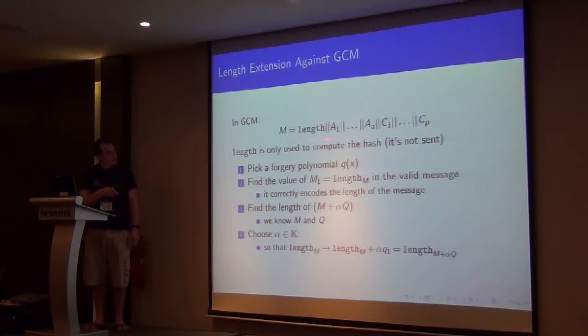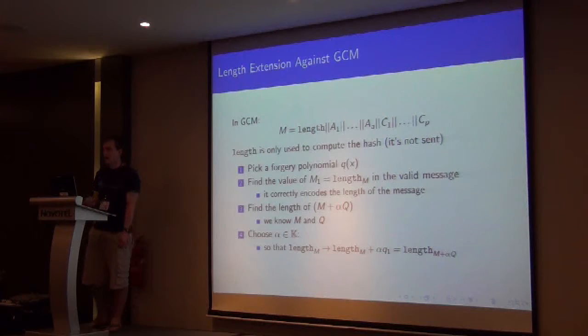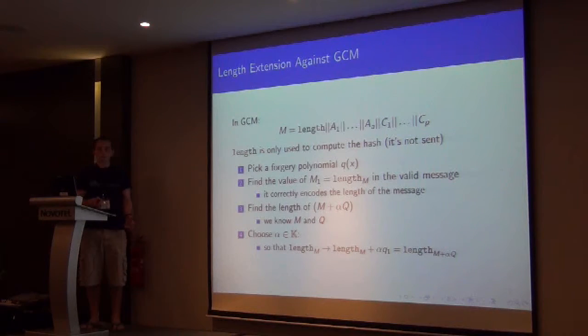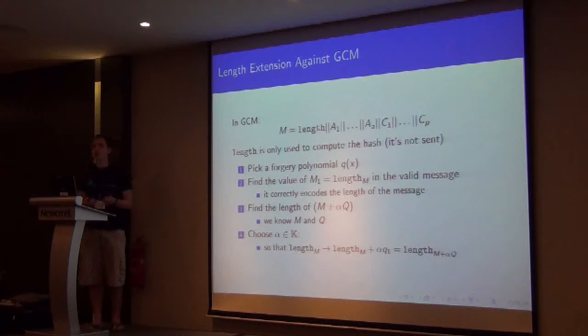So in GCM, your message looks a bit like this. The first block is the length of the associated data and the ciphertext. And then the rest of the message follows. And we only use the length field, so you can compute the hash. And we don't actually send that with the rest of the message. And what we suggest is you should pick your forgery polynomial. So you're going to use the simple method from earlier. Or one of the existing forgery polynomials from another attack.